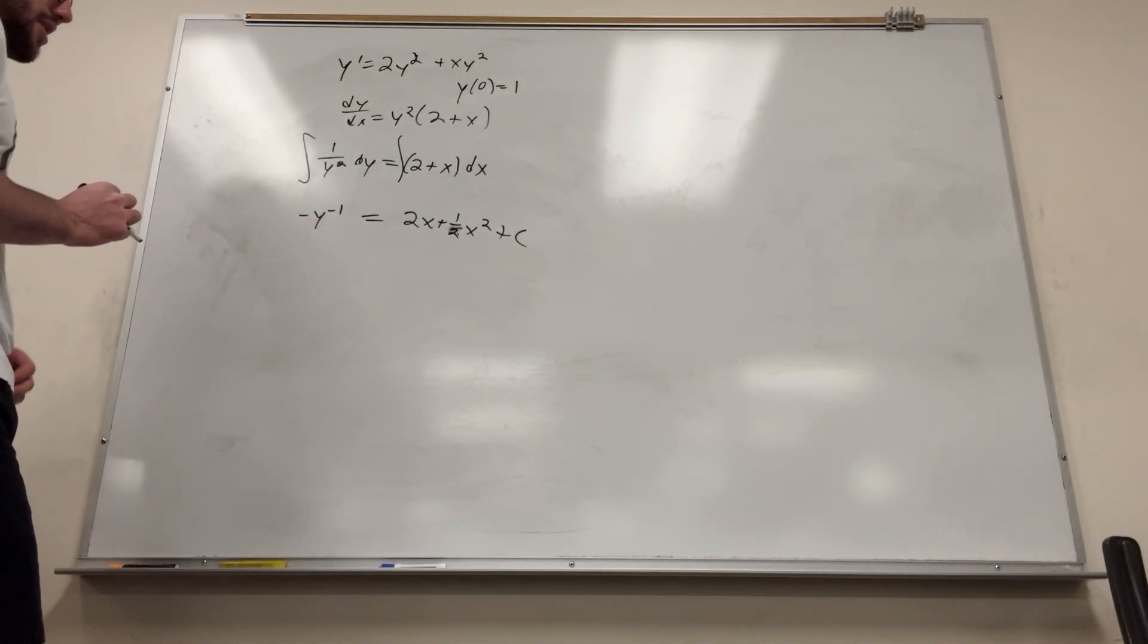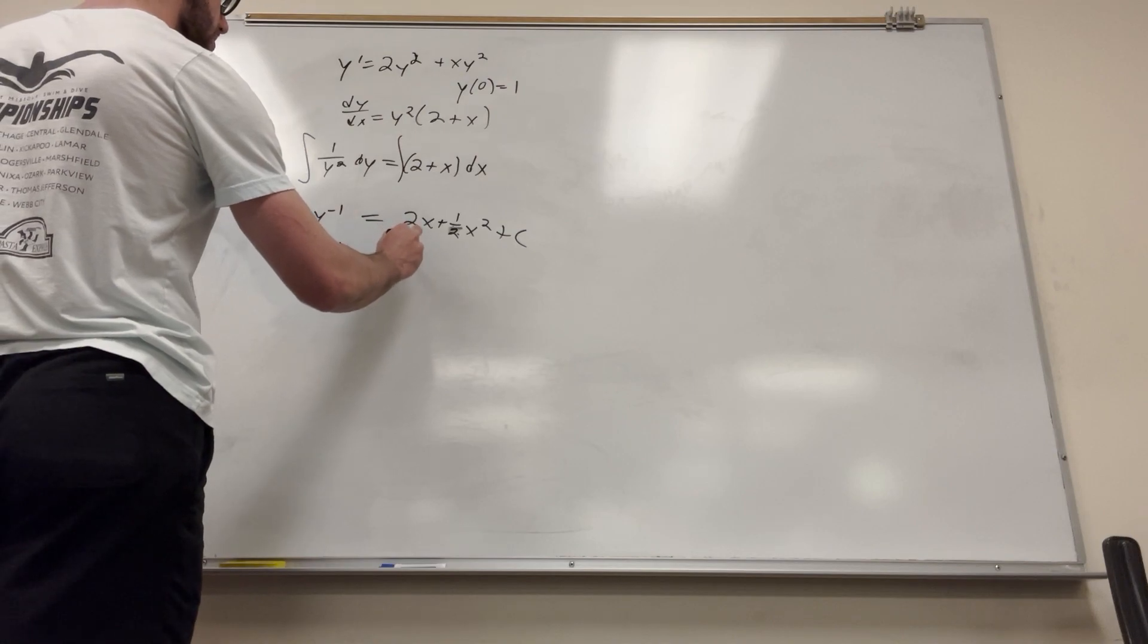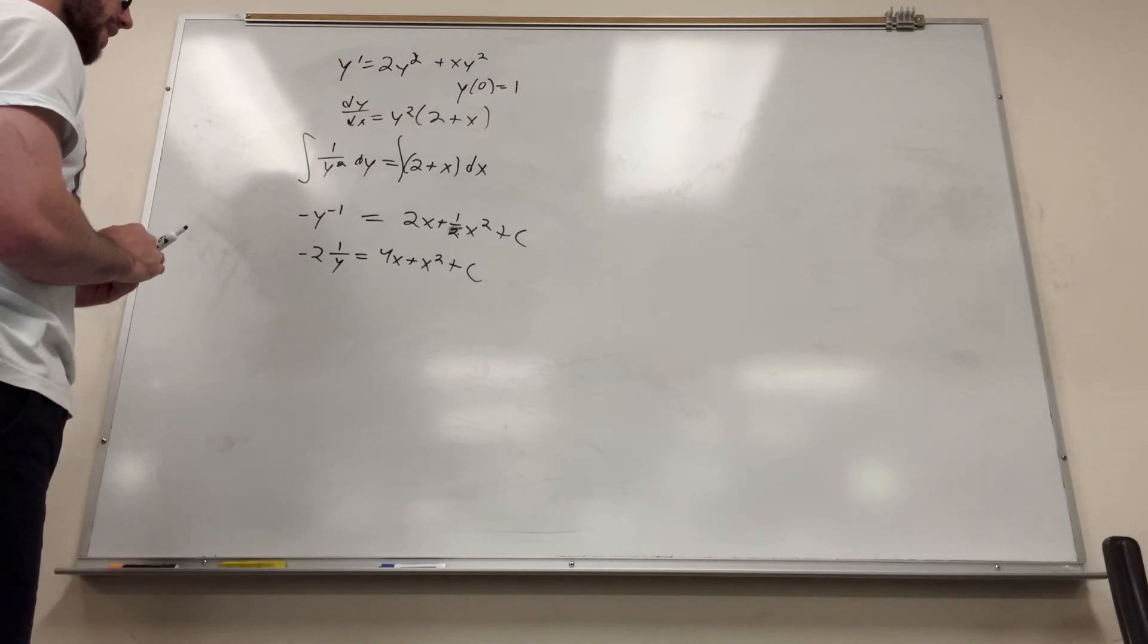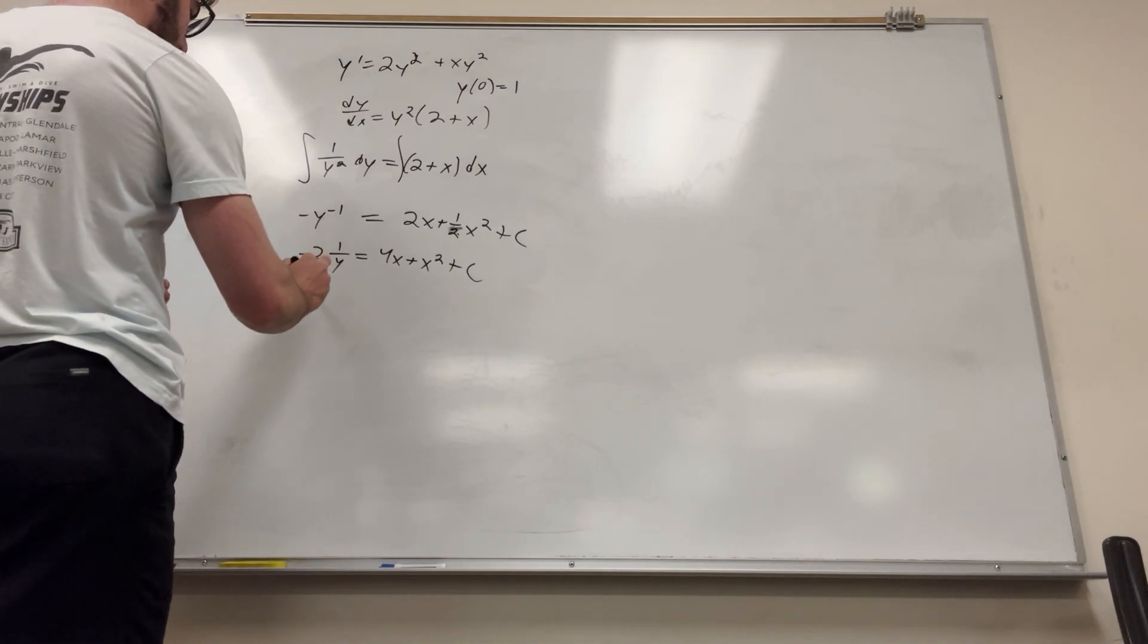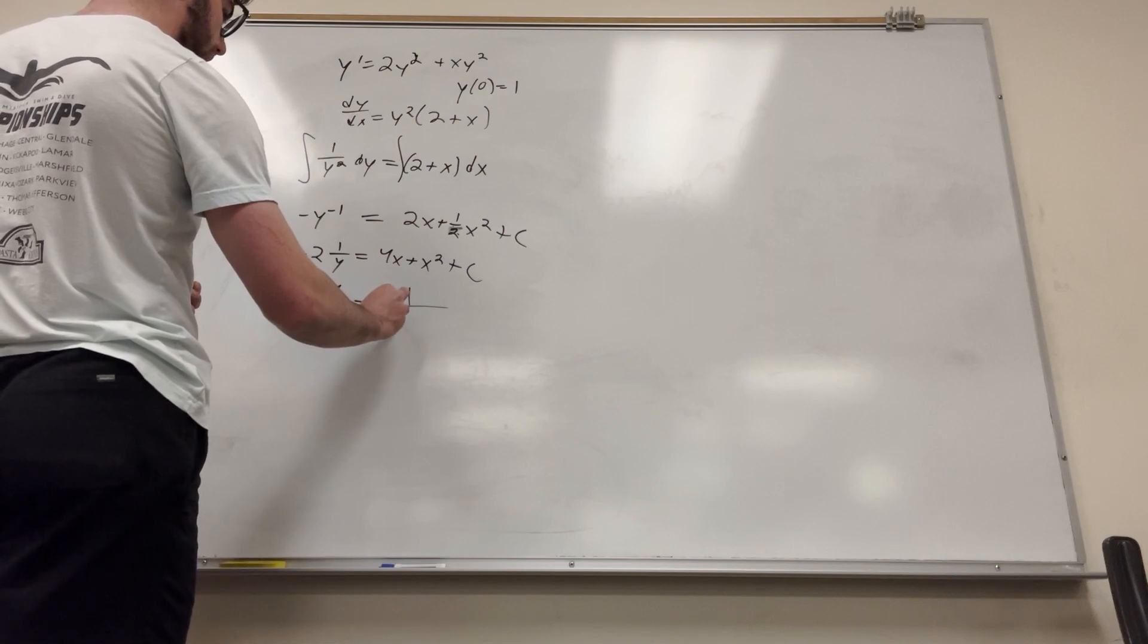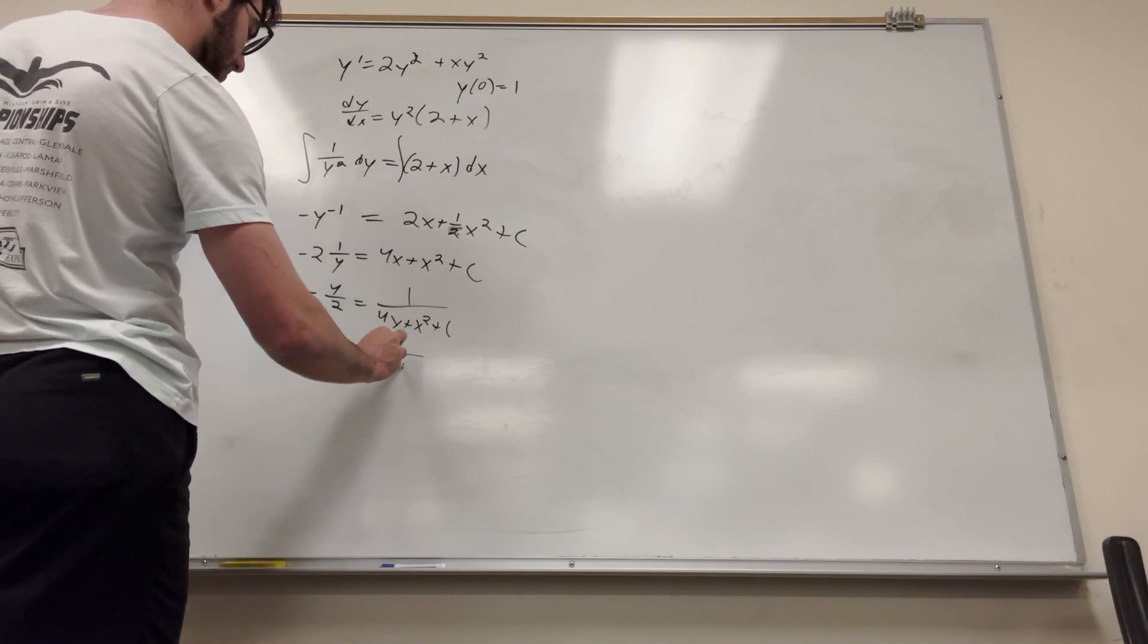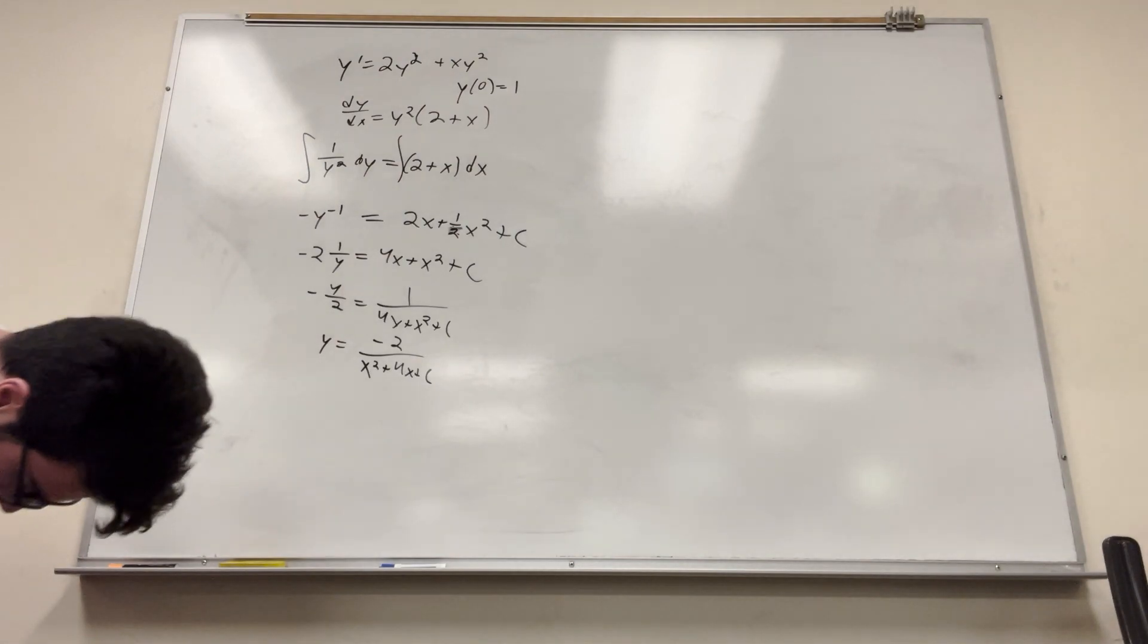Integrating this, it's going to be 2x plus 1 over 2x squared. And plus c, of course. I'm going to go ahead and multiply both sides by 2 just to make it a little simpler. So negative 2, 1 over y is equal to 4x plus x squared plus c. C stays the same. How are we going to do this? You take the inverse of both sides. So negative y over 2 is equal to 1 over 4x plus x squared plus c. And then multiply by negative 2. So y is equal to negative 2 over x squared plus 4x plus c.